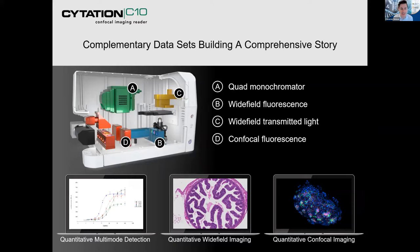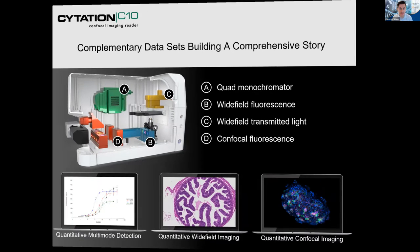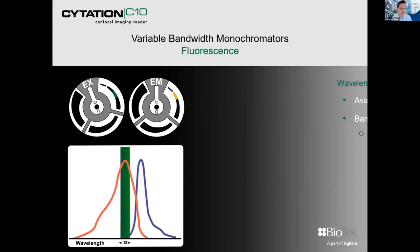And now the Citation CX10, combining spinning disk confocal microscopy, essentially brings it to every laboratory since the footprint is so small. Within this, we have complementary data sets building a comprehensive story through four key components: the quad monochromator, wide field fluorescence, wide field transmitted light, and confocal microscopy.